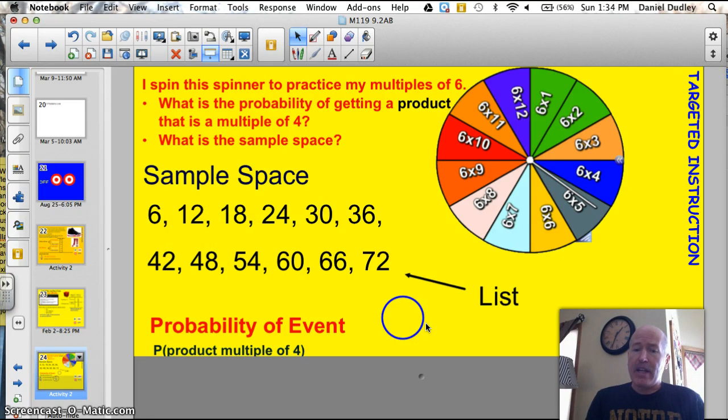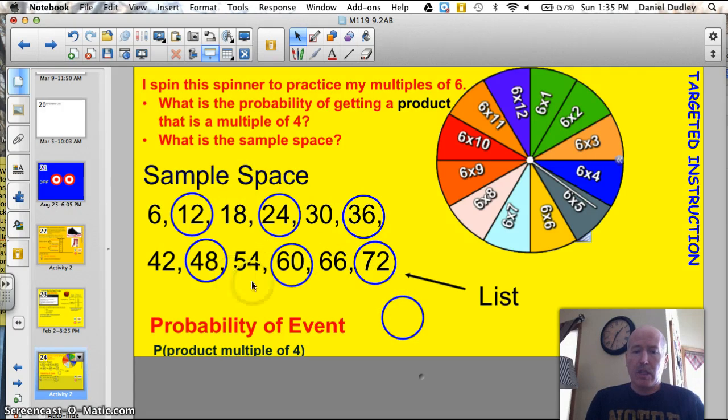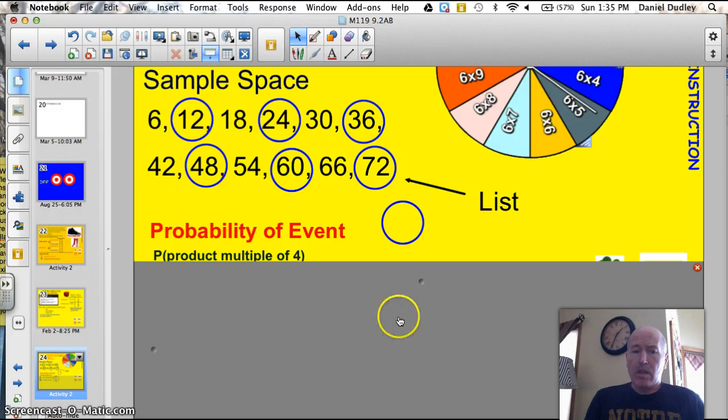Now, I just have to go through and find out what my probability of getting a product that is a multiple of four. Well, twelve is a multiple of four. Twenty-four is a multiple of four. And thirty-six is a multiple of four. Forty-eight is a multiple of four. Sixty is a multiple of four. And so is seventy-two. So, my sample space includes all of these numbers. Total of twelve.